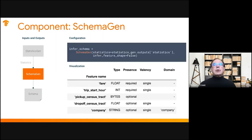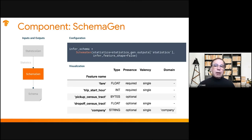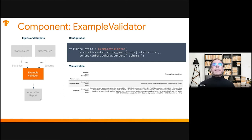SchemaGen uses the result from StatisticsGen — without using Apache Beam — to understand the schema of your data: what are your data types, and for categorical variables what are the valid values (the domain). For features with multiple values like arrays, it determines valency — single or multiple — and whether features are optional or required (presence). ExampleValidator then takes those statistics and schema and looks for problems, and since you're running in an automated framework where no one is watching, you want to catch things automatically.